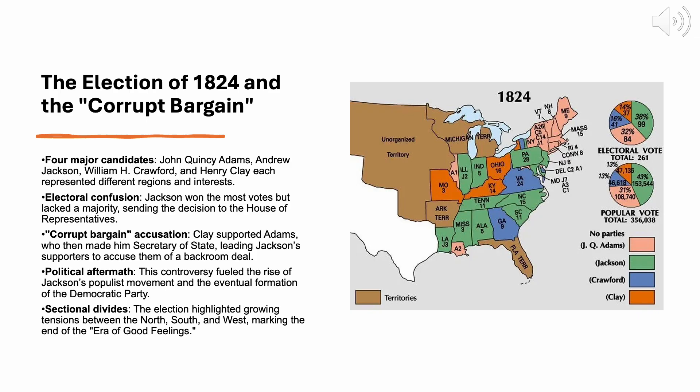Now we will move on to the election of 1824. The election of 1824 is one of the most significant and controversial elections in American history, signaling the end of the so-called Era of Good Feelings and marking a pivotal shift in the nation's political landscape. With the Federalist Party having all but disappeared, the Democratic-Republican Party was the dominant political force, but it was internally divided into competing factions. Unlike previous elections where a clear candidate emerged from within the party, the 1824 election saw four major contenders, each representing different regions and interests within the country.